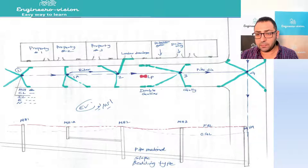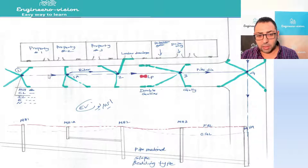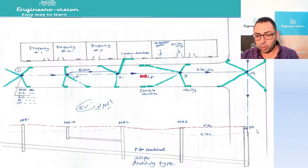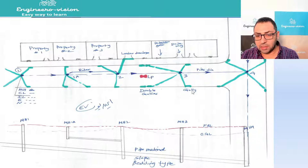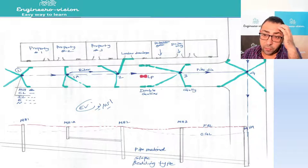This is the route, this is the edge of asphalt, and this is our surface water network. Manholes one, two, three, and four are in our network. As you can see in the plan layout, the flow direction goes from manhole one to manhole two to manhole three to manhole four. The green connections you see here are the galleys.